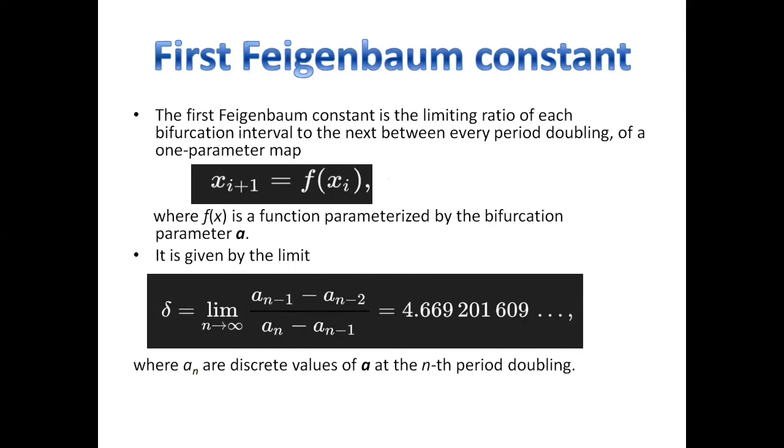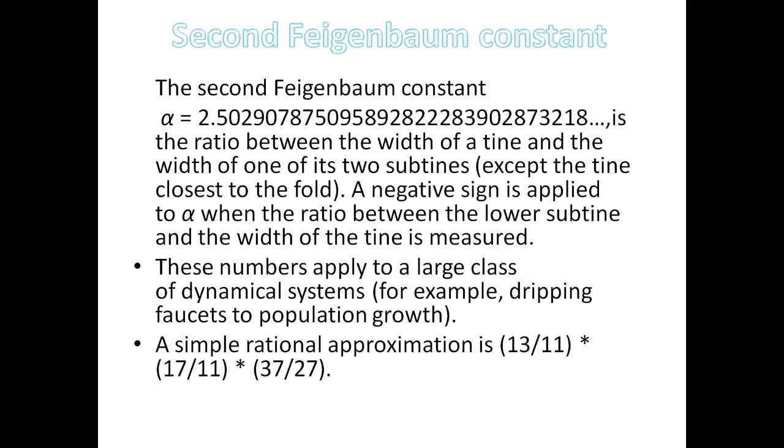The second Feigenbaum constant is the ratio of the width of a sharp point and the width of its sub sharp points. And this is denoted by alpha and its value is 2.502907 and so on.